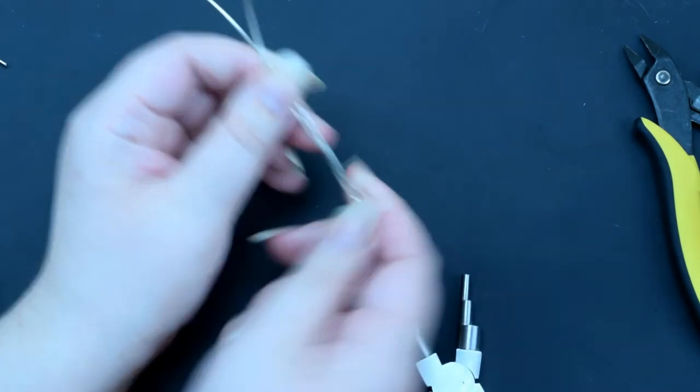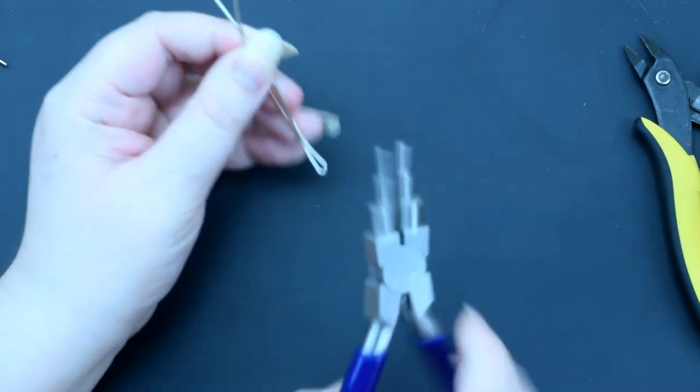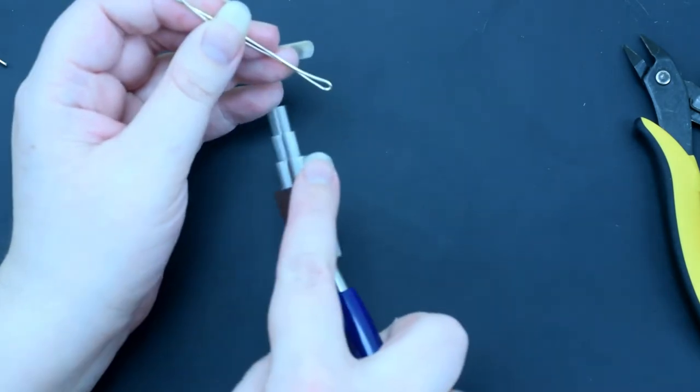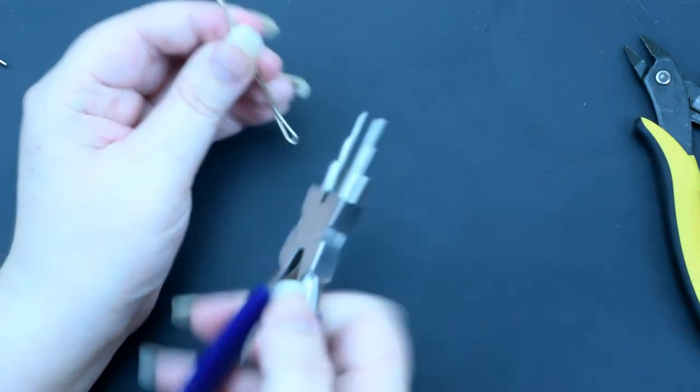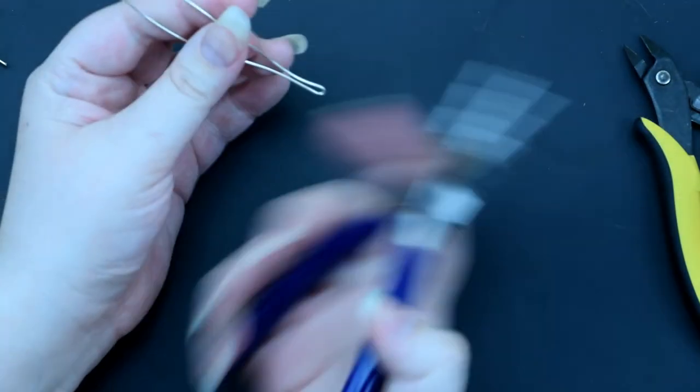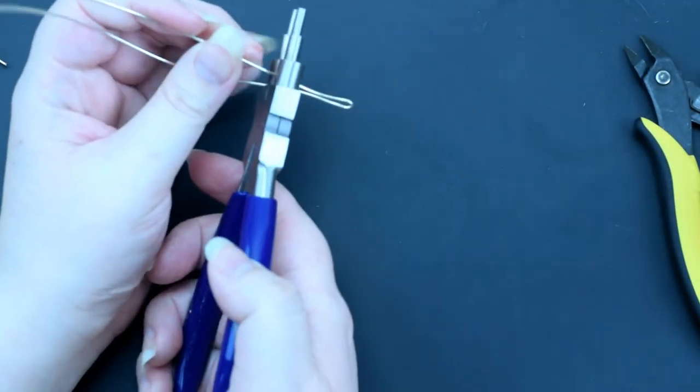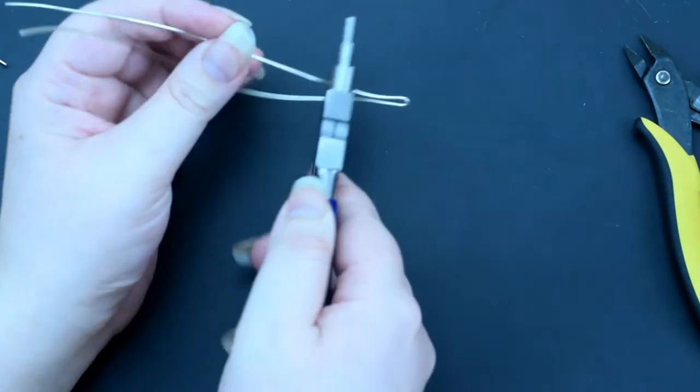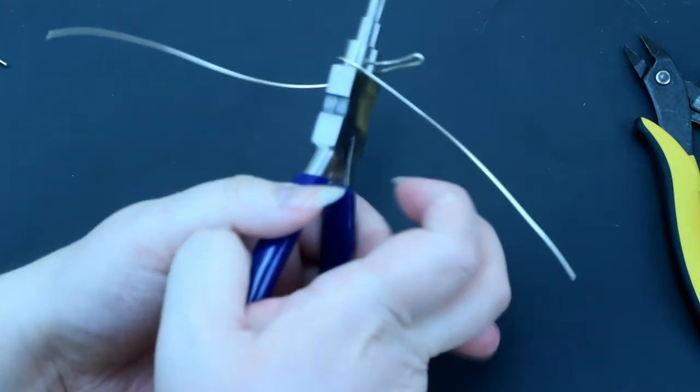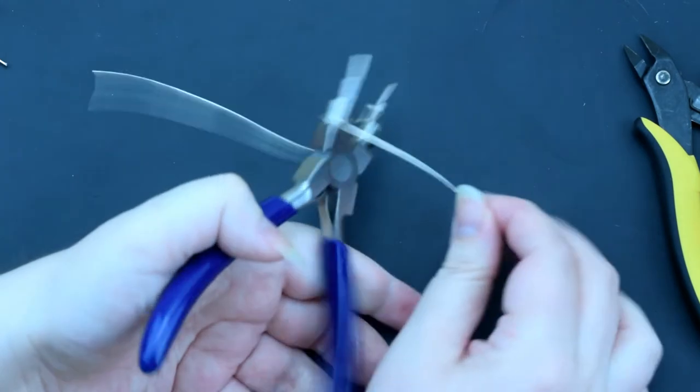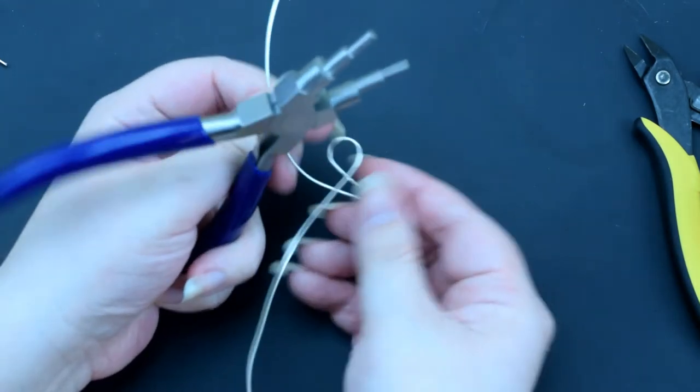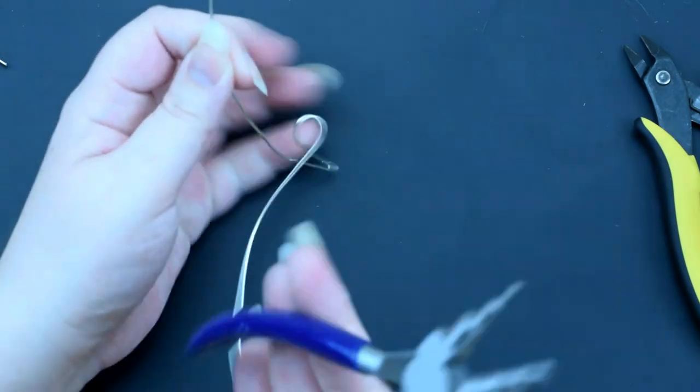Then I'm going to go 2cm up and I'm going to use the biggest barrel. I'm going to move these apart slightly and about here, that is where I'm going to bend over. And pop that out and do the same on the other side.